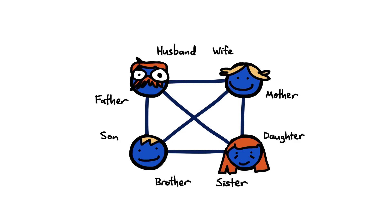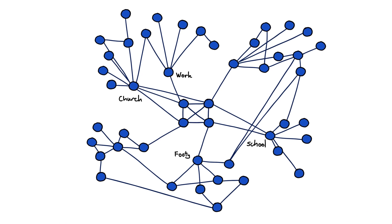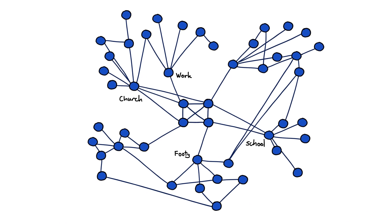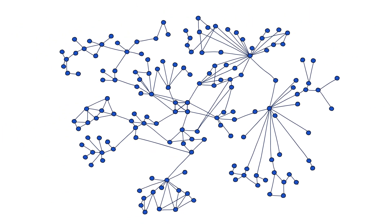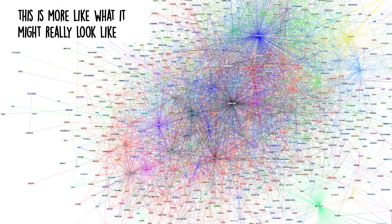So how do computer scientists use these models in the real world? With the enormous computing power available on the cloud, computer scientists can model very large networks using publicly available data or census data. From a single household, a large map can be constructed, and this is repeated for every household in a region. By modeling the interactions of every individual in every household, we can get a lot of information about how a virus might spread, which in turn informs the best actions for prevention.